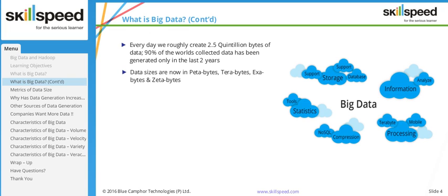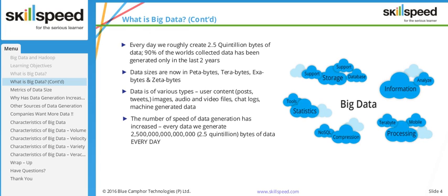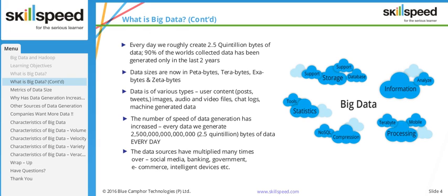One petabyte is 1,024 terabytes. Since the internet has become a mature model, with many social media platforms and mobile phones becoming an integral part of our lives, the sources of data generation have tremendously increased. Ten years ago, the internet wasn't fully mature and mobile phones and social media were in their cradle stages, so data sources were very limited. Now even a child with a mobile phone takes photos, shares them on Instagram, and that becomes part of the big data problem. Data sources have multiplied many times over — social media, banking, government, e-commerce, and more.